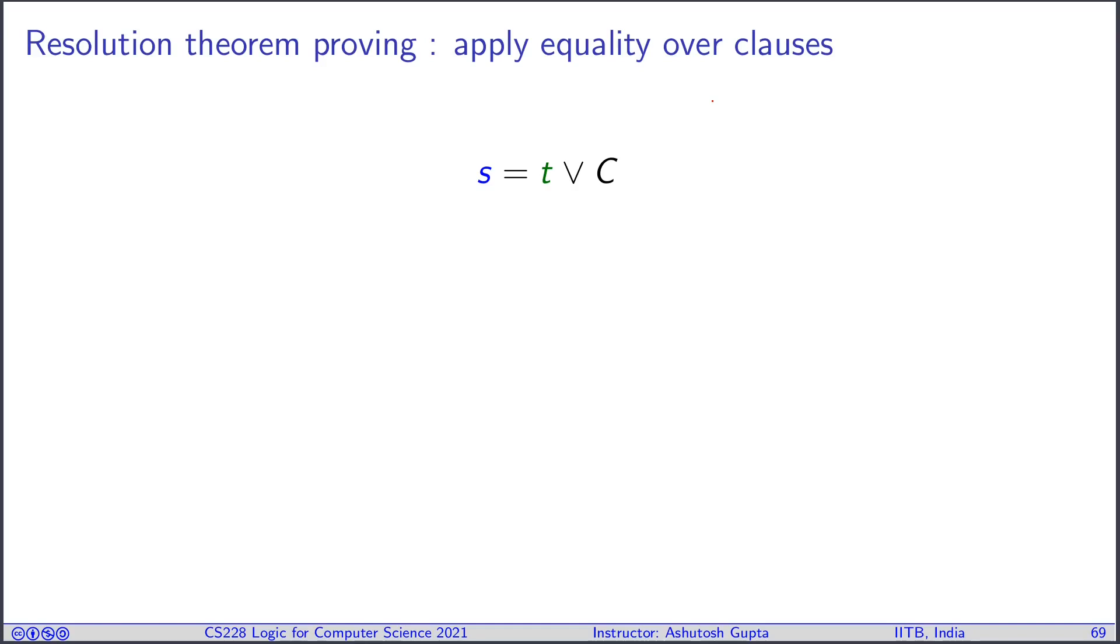How do we go about using equality in our proof system? Suppose there's an equality in your clause, s is equal to D, and there's some rest of the clause C. And somewhere you have derived D, a clause D which has some term appearing U. And for some reason you know that you can unify s and U and obtain sigma.